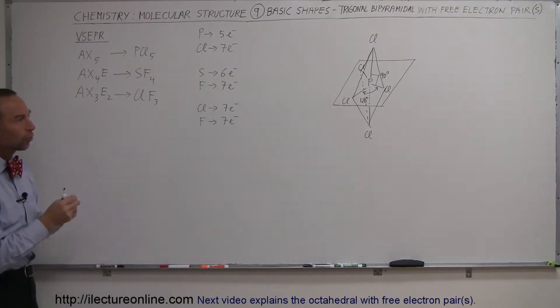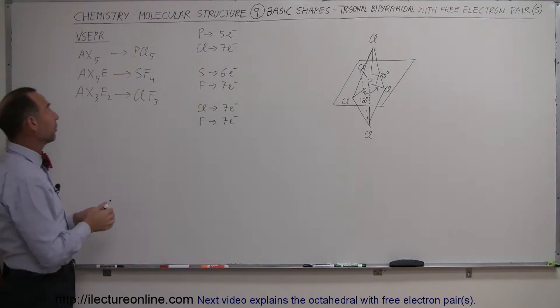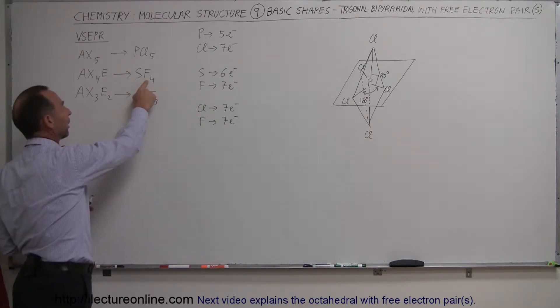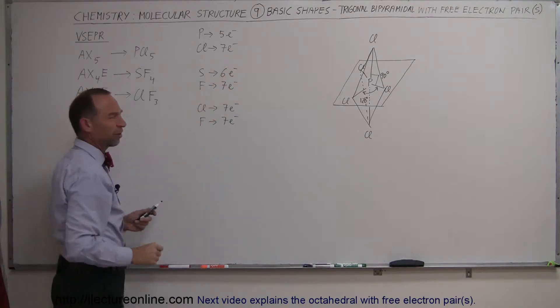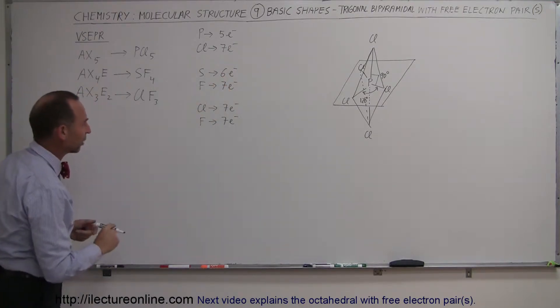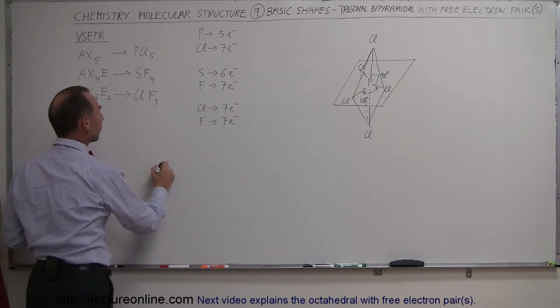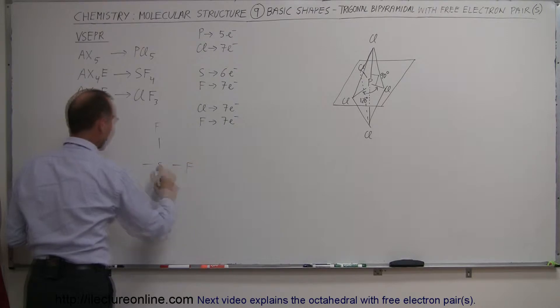So what happens now when one of those chlorines is replaced by a free electron pair? For example, when we have sulfur tetrafluoride, there we have one sulfur which has initially six valence electrons. So let's draw the Lewis structure down and see what it looks like. So we have sulfur with six valence electrons, and we have four fluorines. So like that.